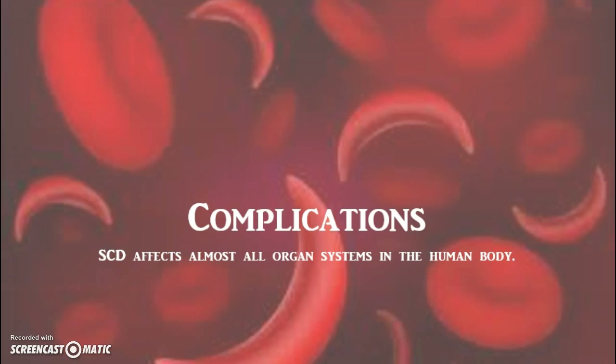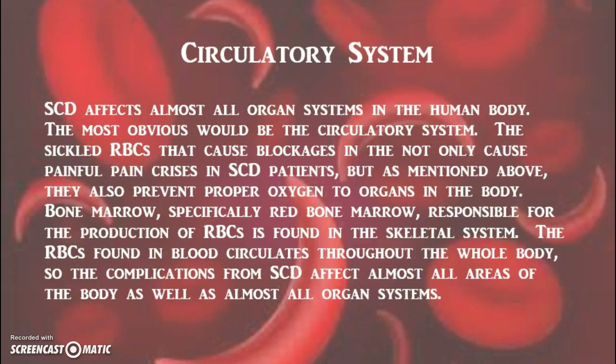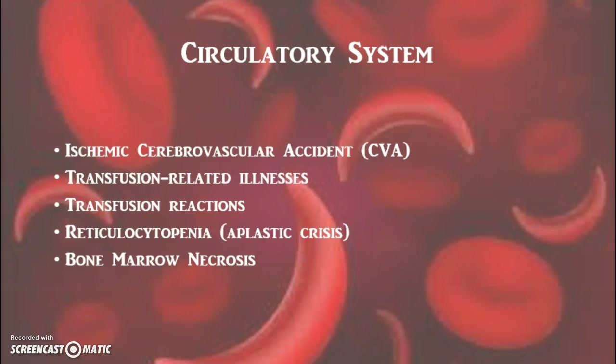What organ systems are affected by sickle cell anemia? Sickle cell disease affects almost all organ systems in the human body. The most obvious is the circulatory system. Sickled red blood cells are unable to carry adequate amounts of oxygen to the tissues and organs throughout the body. Possible complications include ischemic cerebrovascular accident, transfusion-related illnesses and transfusion reactions, reticulocytopenia, and bone marrow necrosis.